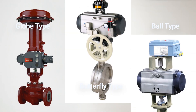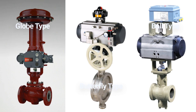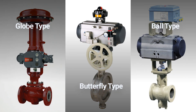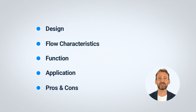There are several types of control valves, each with its own unique characteristics and applications. Here are three main types of control valves: globe type control valves, butterfly type control valves, and ball type control valves. We will evaluate each type from five different perspectives to determine the best solution for your application: design, flow characteristics, function, application, and pros and cons.